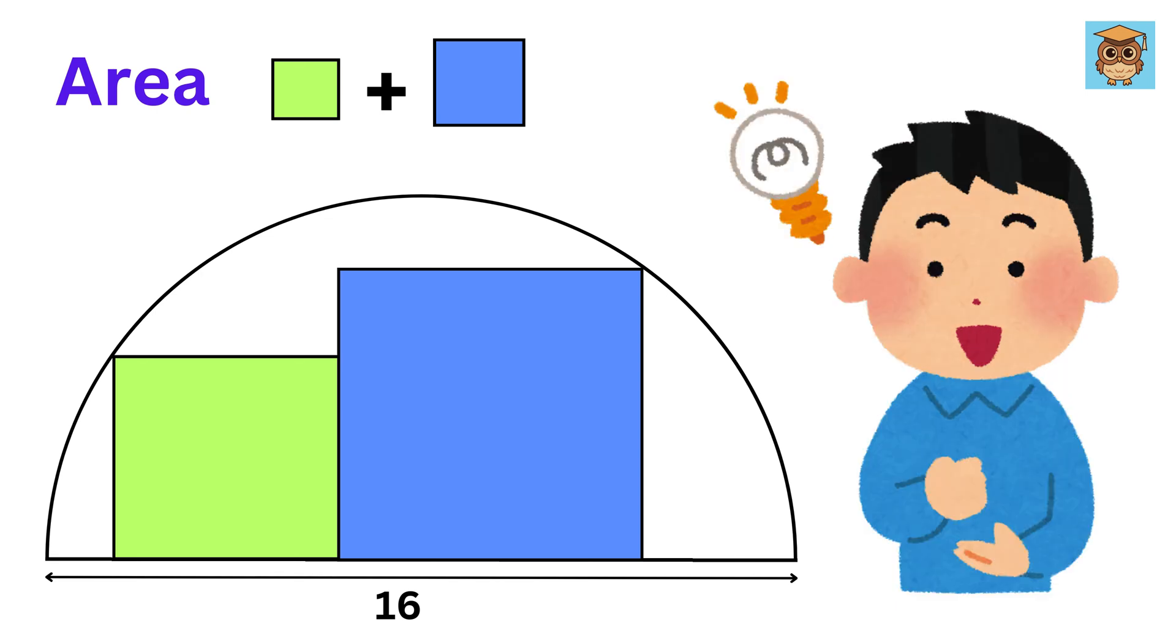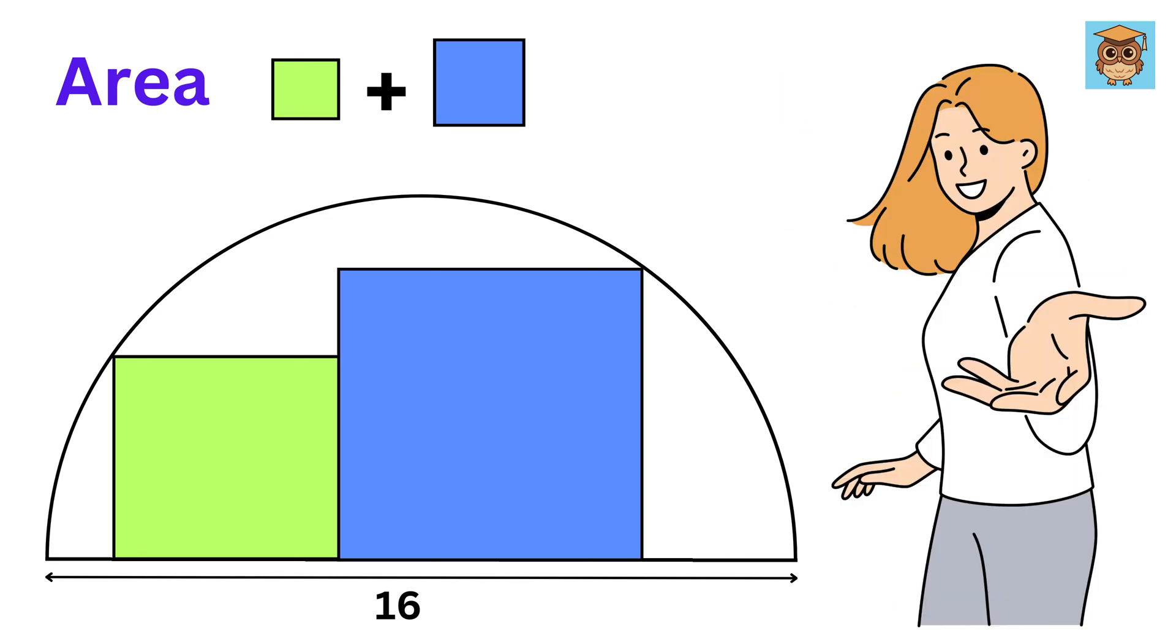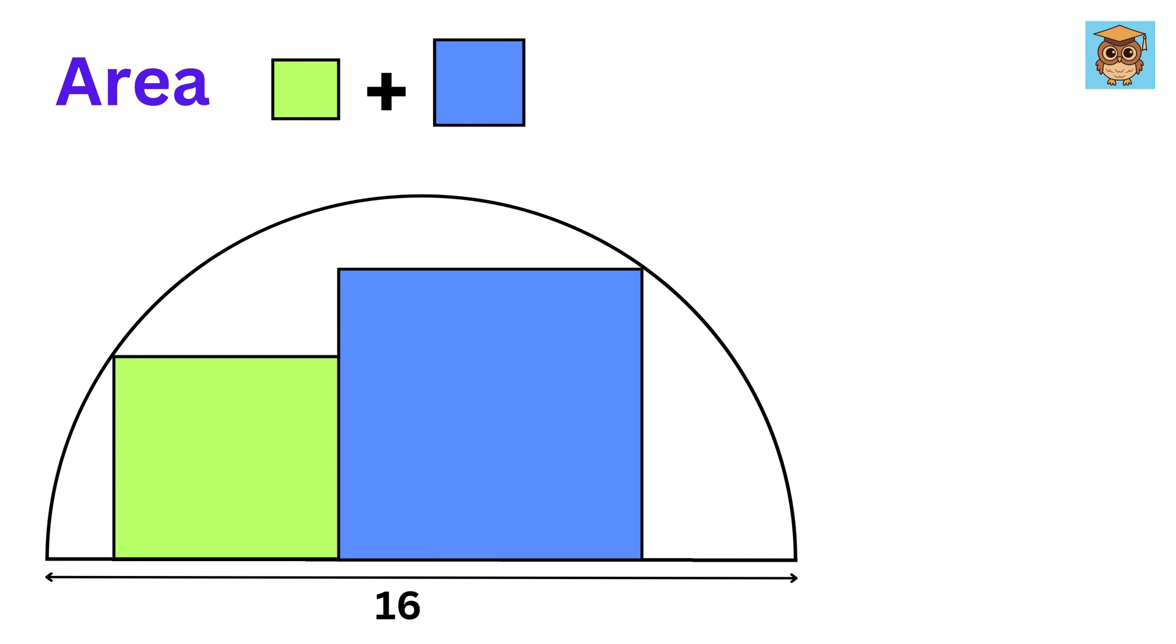Let's tackle this problem step by step and discover the beauty of the solution. Let us first label the sides of the squares as x and y, like this. So, what will be the area of both these squares?